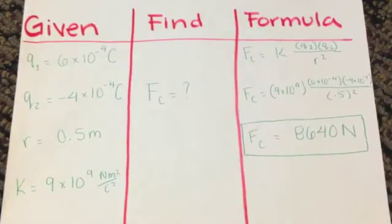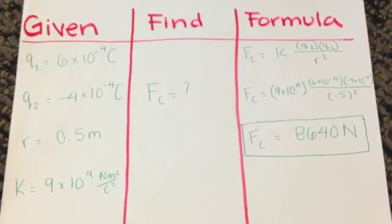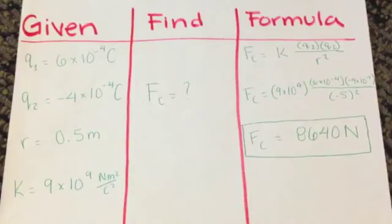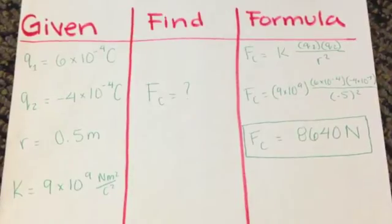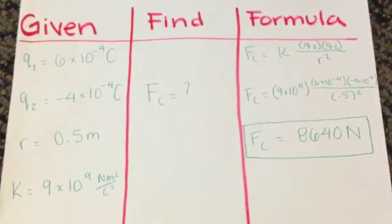In order to find force in the find column, we write F. For the formula column, first we need to write the Coulomb's Law equation. Then we plug in the numbers.